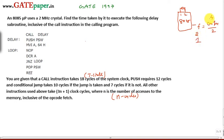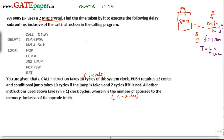Since the problem states that a 2 megahertz crystal is given — not the operating frequency — the crystal is divided by 2 internally, giving an operating frequency of 1 megahertz. Therefore T equals 1/f, which is 1 microsecond: the time required to execute one T-state cycle.